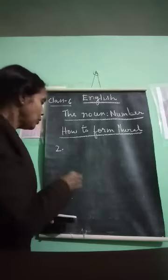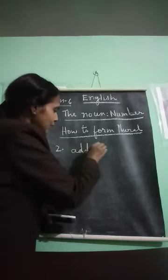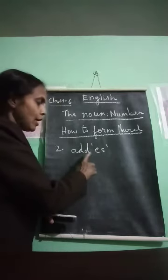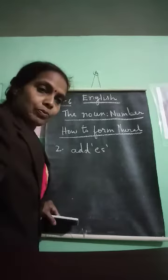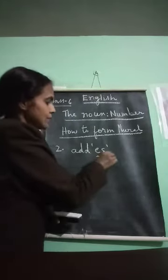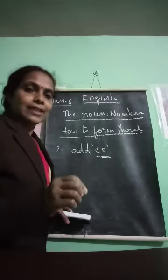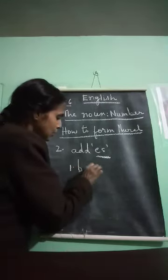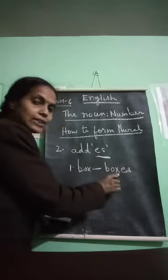Now the second rule: some nouns require adding -es to change to plural. Those are nouns which end in -s, -ch, -sh, or -x. For example: box → boxes, we add -es.